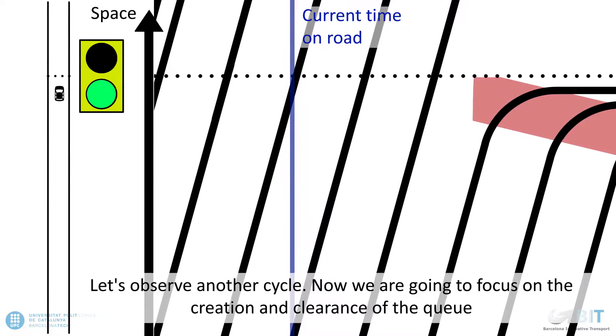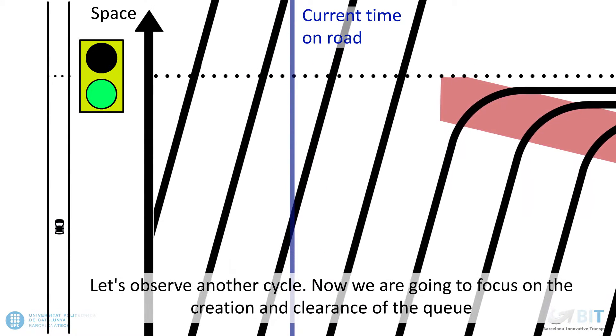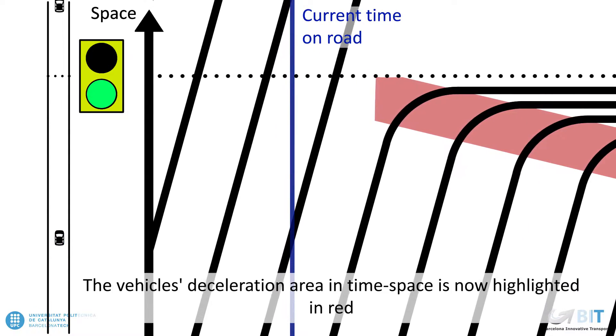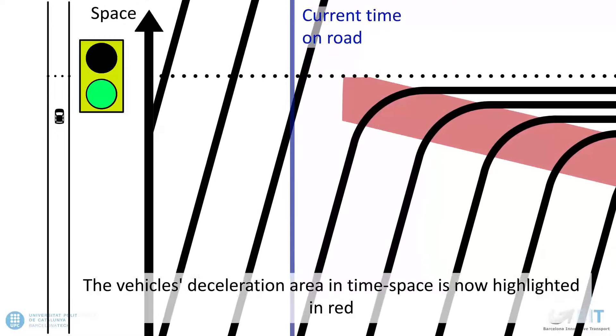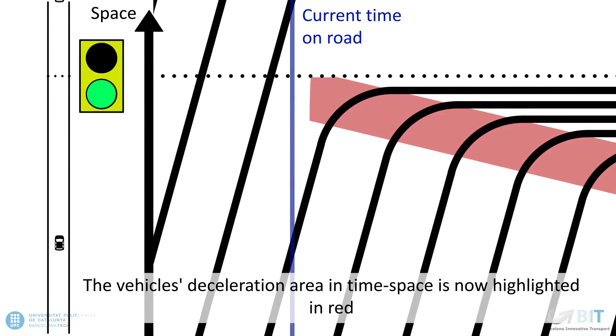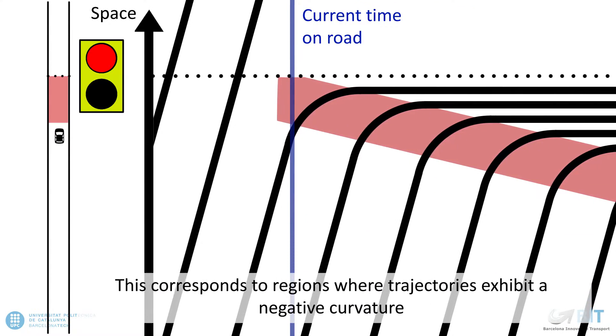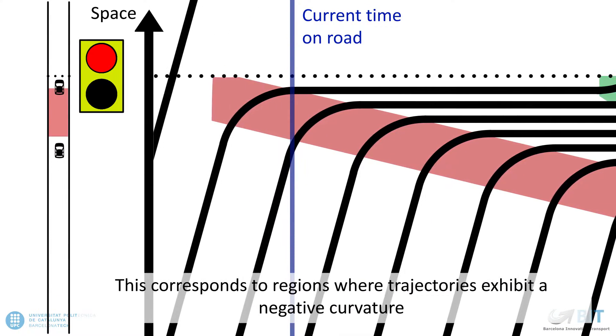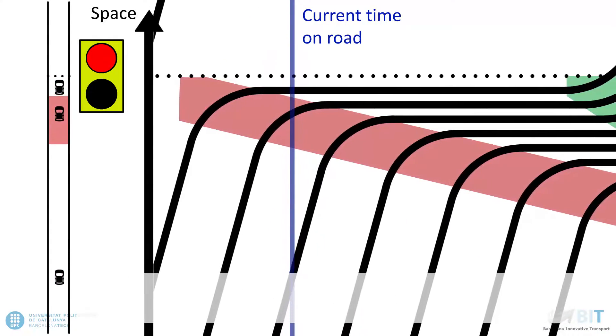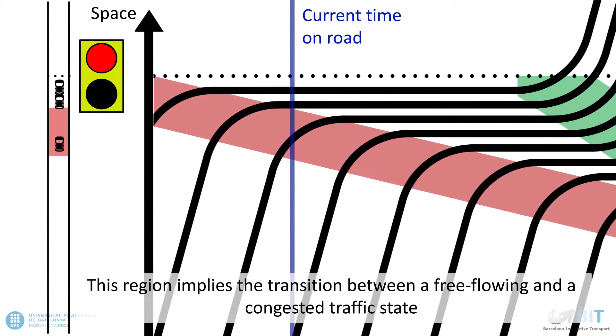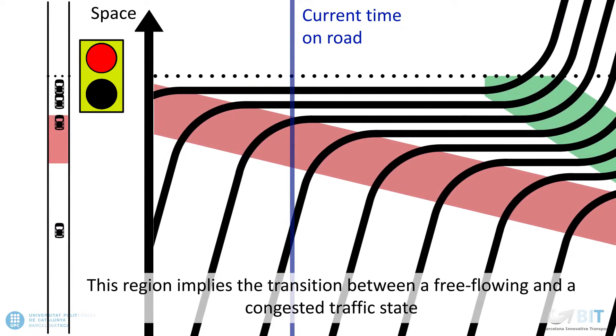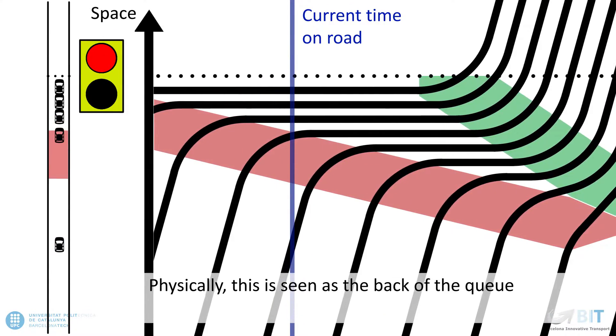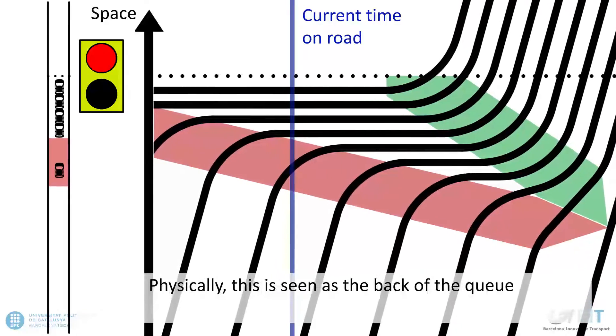Now we are going to focus on the creation and clearance of the queue. The vehicle's deceleration area in time-space is now highlighted in red. This corresponds to regions where trajectories exhibit a negative curvature. This region implies the transition between a free-flowing and congested traffic state. Physically, this is seen as the back of the queue.